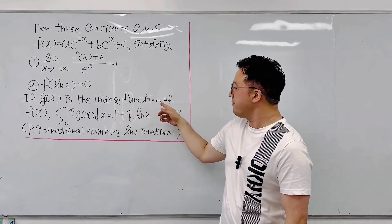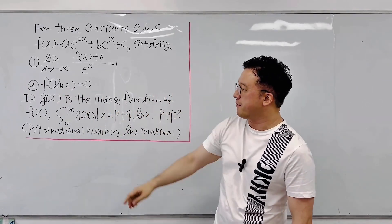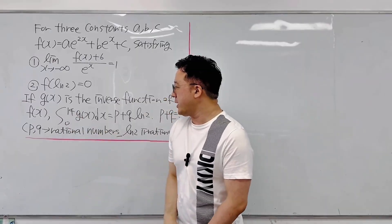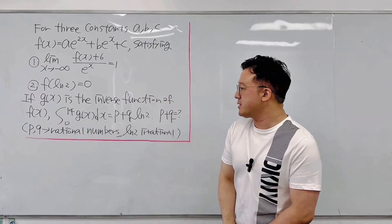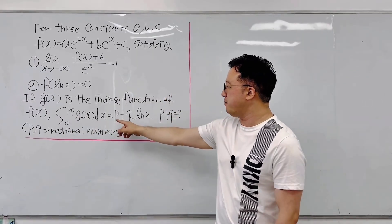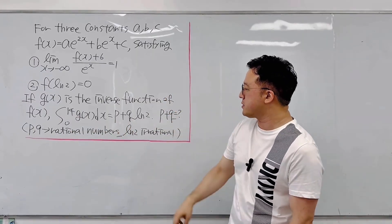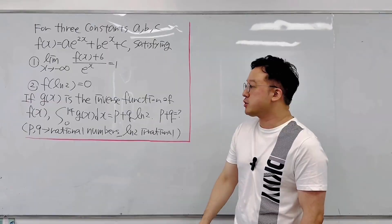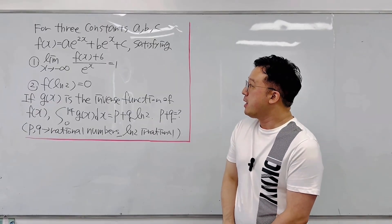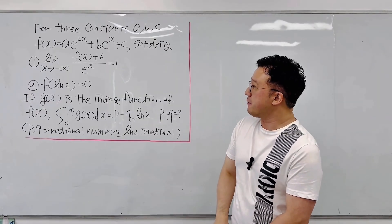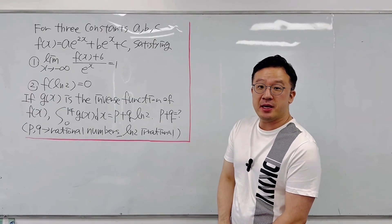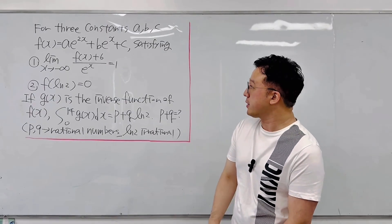If g of x is the inverse function of f of x, then the integral from 0 to 14 of g of x dx is now p plus q times ln 2. What's the value of p plus q? The first step is to get the values of a, b, and c.